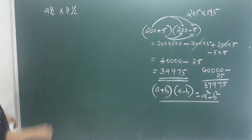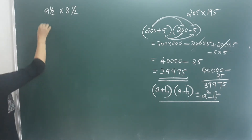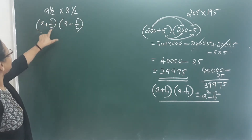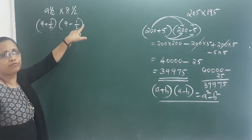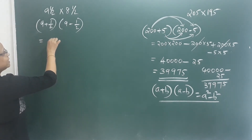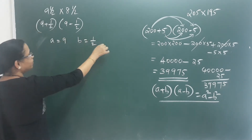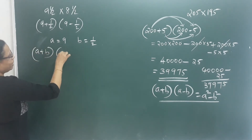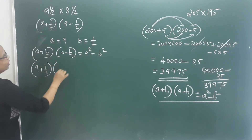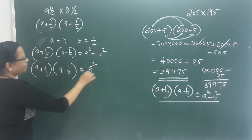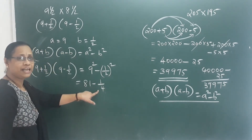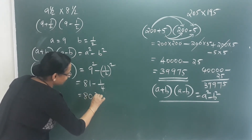Let's do one example — let's take the third example: 9 and a half into 8 and a half. We have 9 plus half into 9 minus half. Using a plus b into a minus b equals a square minus b square, we get 9 square minus half squared, that is 81 minus 1 by 4.